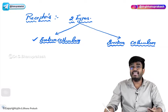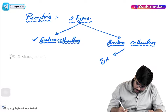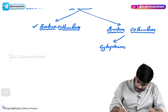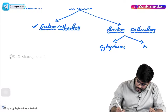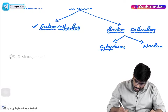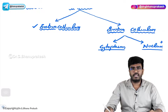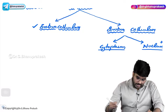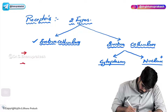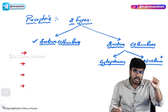If the receptor is present inside the cell, it can be present in the cytoplasm or even in the nucleus. So intracellular receptors are of two types: cytoplasmic receptors or intranuclear receptors. This is a broad classification of receptors. Now let's look at the examples of extracellular receptors — the receptors which are present on the cell surface, on the cell membrane.